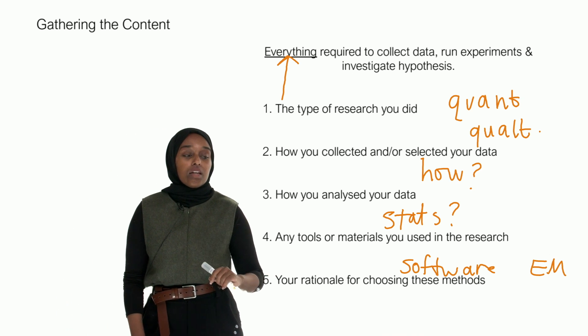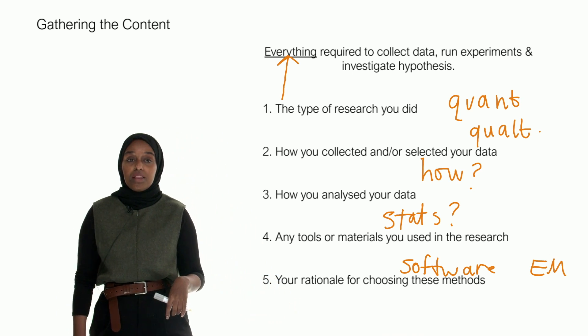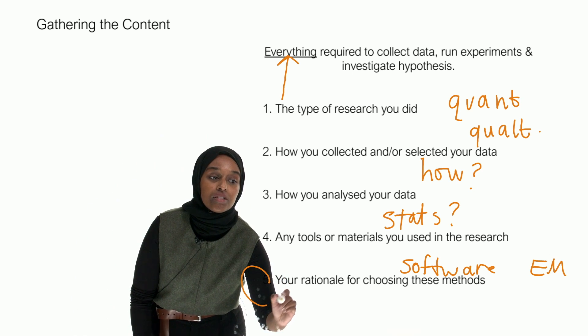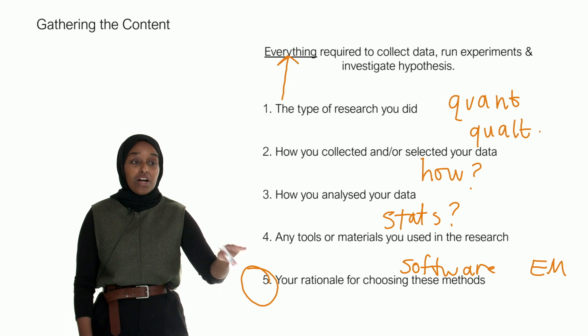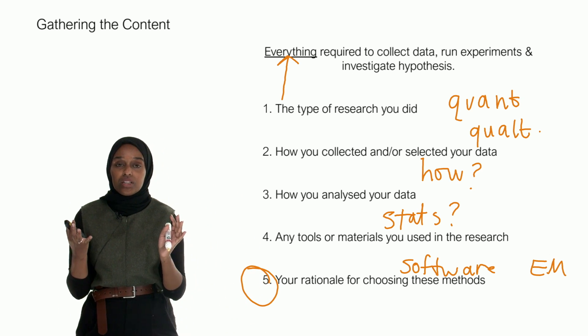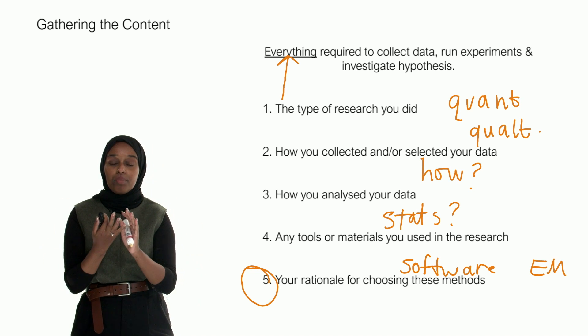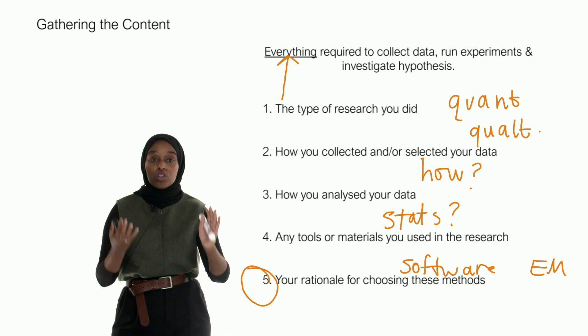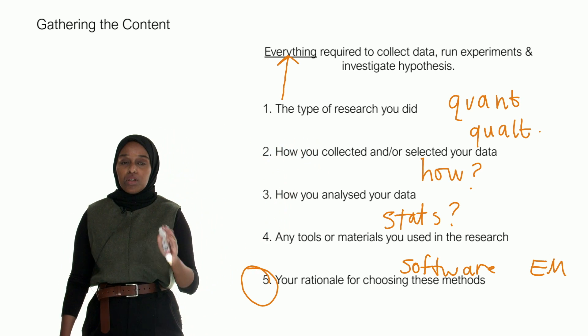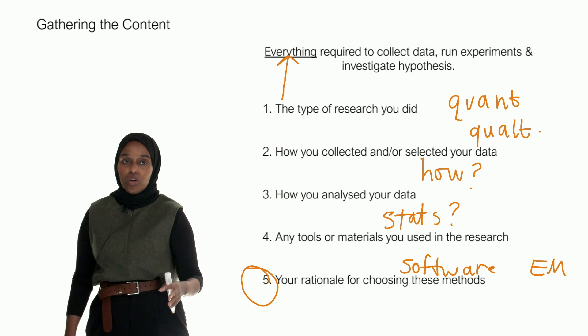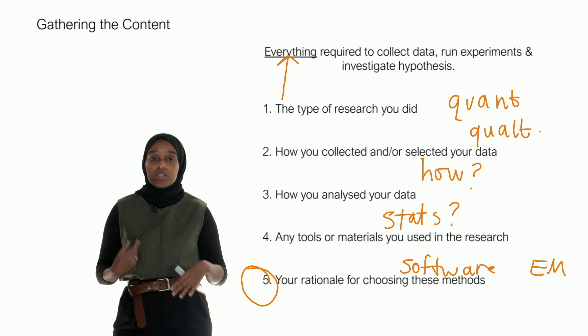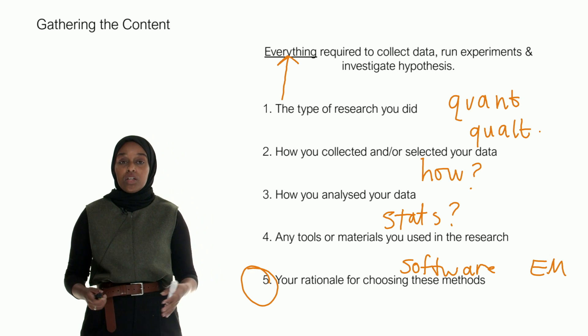Lastly, your rationale for choosing these methods. I think this point is what I'm going to emphasize a lot in this lesson. The rationale should be the one standout throughout your materials chapter—you're constantly justifying everything that you've done. I'm doing qualitative because, I'm doing quantitative because, I chose this stats because. The whole chapter, I would say, is justifying what you've done and why you're doing it.